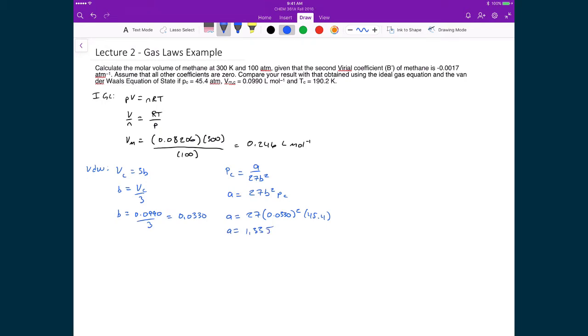Now I could have used the critical temperature to calculate either of these two values, A and B. I just chose this way, using the critical volume and the critical pressure. Regardless, I can continue now and I can just directly calculate what is my molar volume based on the van der Waal equation of state. So pressure is equal to RT divided by the molar volume minus B minus A over the molar volume squared.